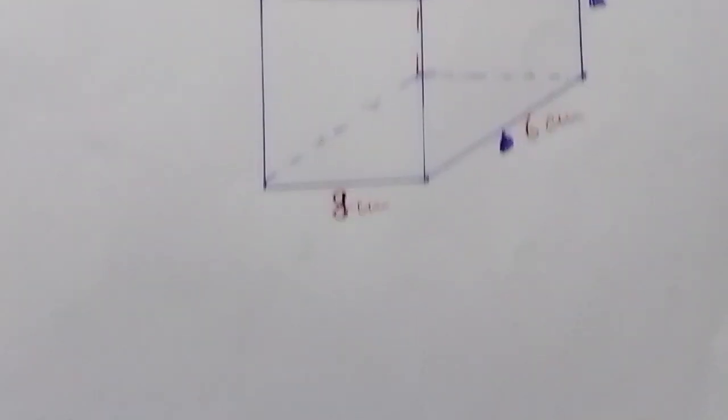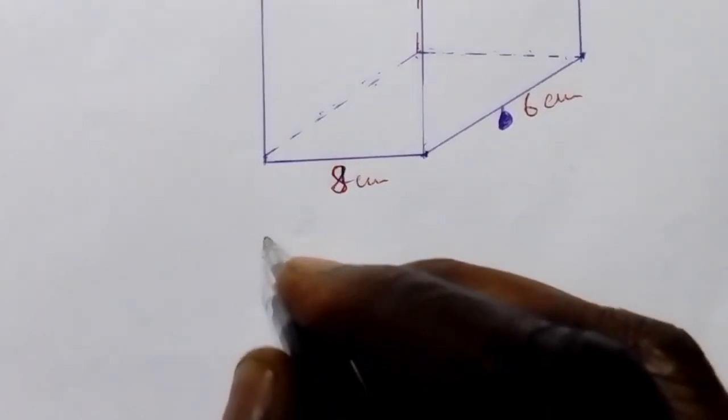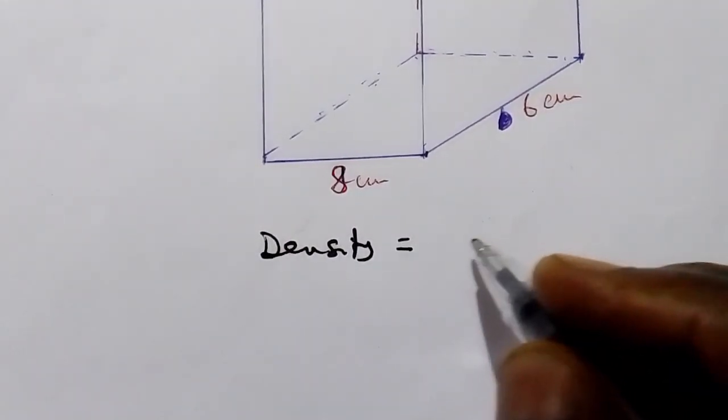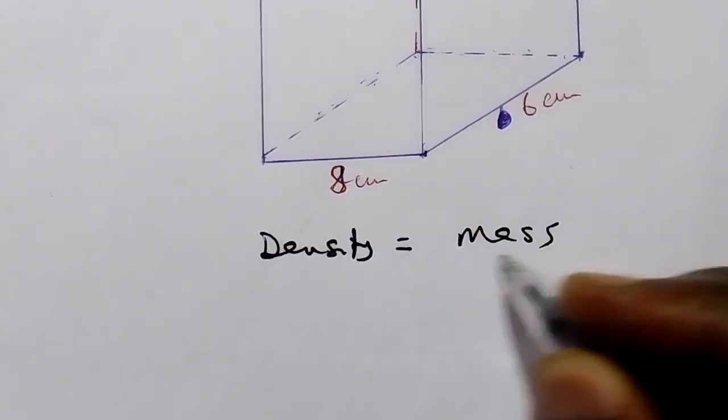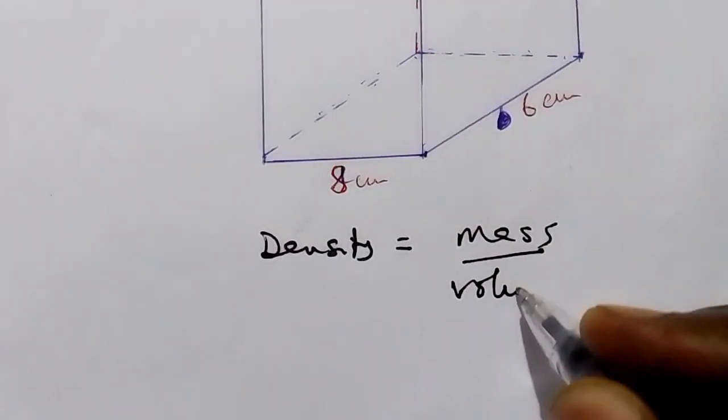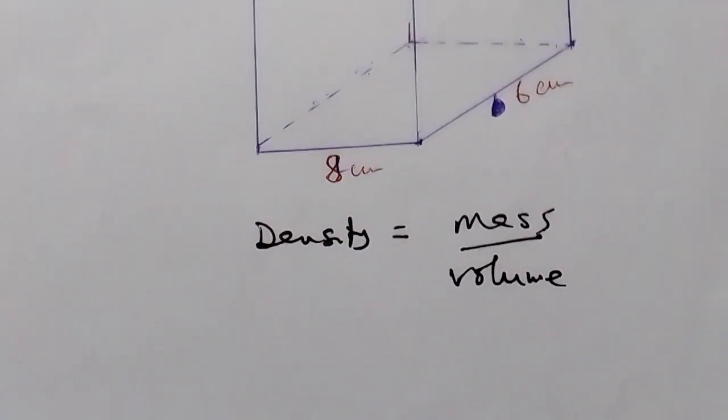So the formula for volume, the formula for density, density is equal to mass over volume. That's the formula for density.